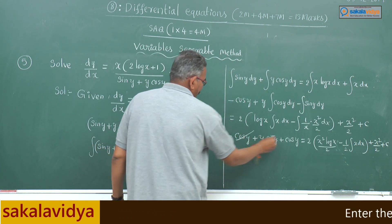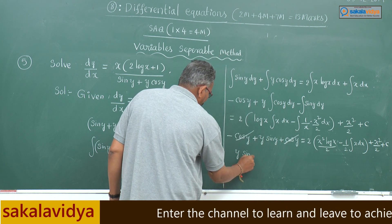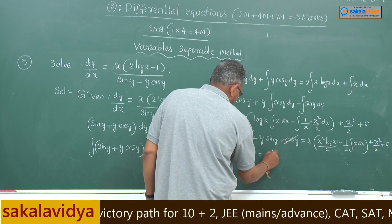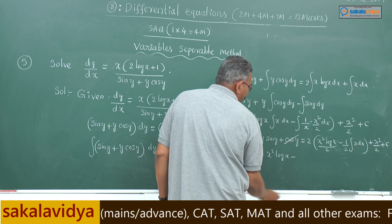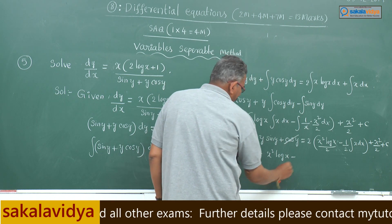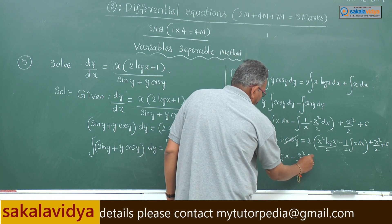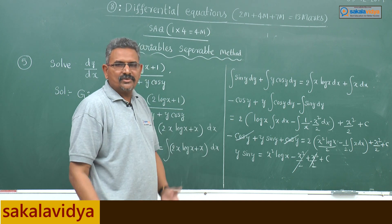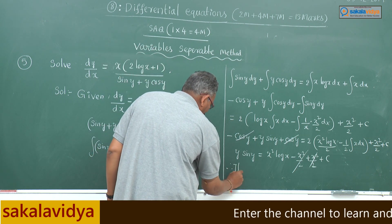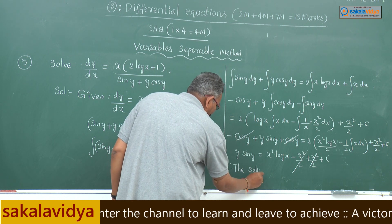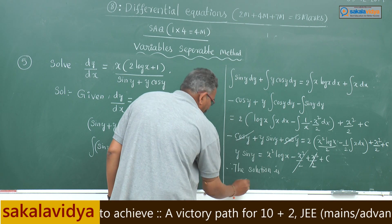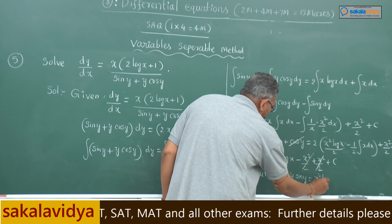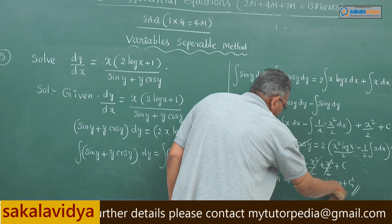Now, cos y and cos y get cancelled. We have y sin y equals: the 2s cancel, giving x squared log x, and minus — the 2s cancel — integral of x dx is x squared by 2, plus x squared by 2, plus constant of integration. These two x squared by 2 terms cancel. Therefore the solution is: y sin y equals x squared log x plus constant of integration. This is the answer.